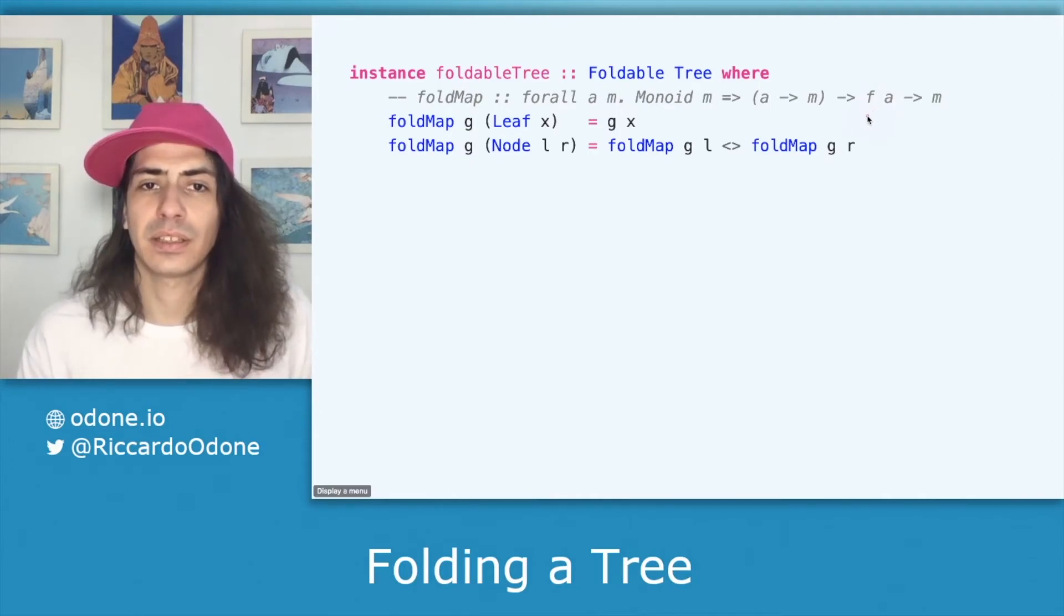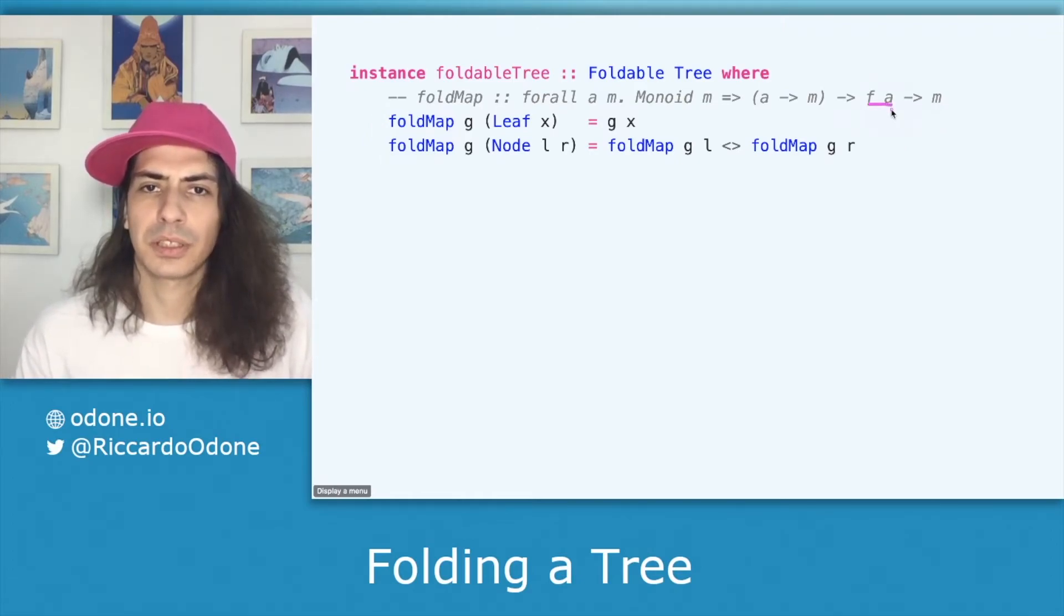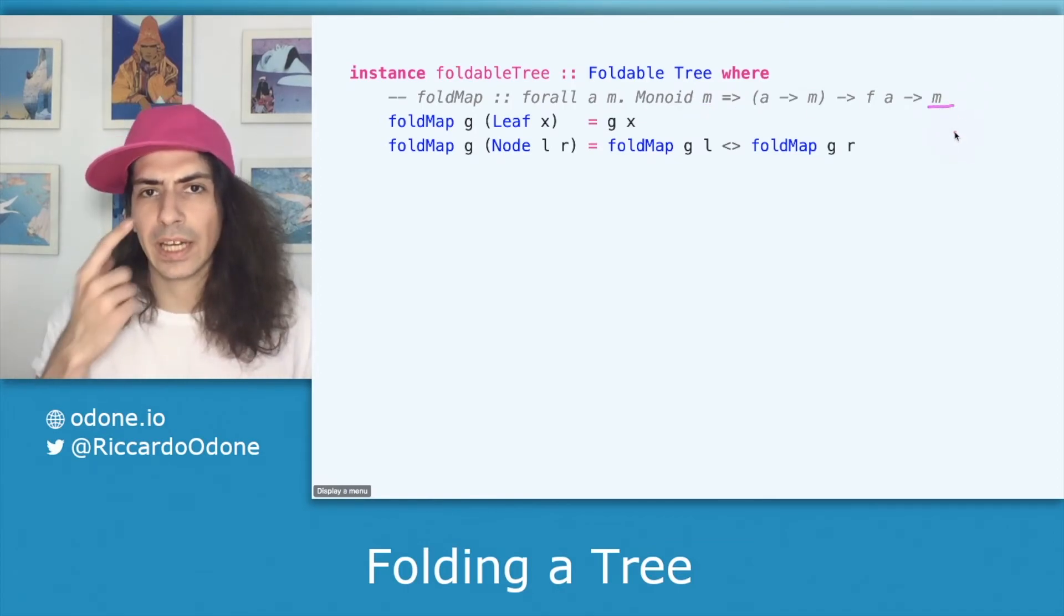Okay now we can define the foldable instance for our tree. Notice that we do that by implementing foldMap function which works this way. We have a second argument the data structure in our case it's tree of char and a function as a first argument that takes each value contained in our tree and transforms it into an m which is a monoid. At the end we get the summary of the data structure into one value.